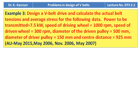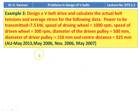Example 3: Design a V-belt drive and calculate the actual belt tension and average stress for the following data: power = 7.5 kW, speed of driving wheel = 1000 RPM, speed of driven wheel = 300 RPM, diameter of driven pulley = 500 mm, diameter of driver pulley = 150 mm, center distance = 925 mm. This question was repeatedly asked in May 2015, May 2006, November 2006, and May 2007.